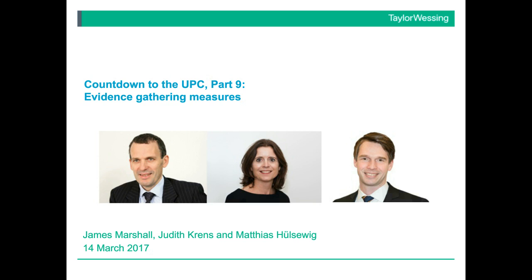Under the UPC agreement, the means of giving or obtaining evidence to prove a party's case in a UPC action falls into various categories. The UPC agreement provides for such matters as hearing the parties, requests for information, production of documents, hearing of witnesses, opinions by experts, inspection, conducting experiments, and sworn statements in writing. These are described in expanded form in the corresponding parts of the Rules of Procedure, which specifically refer, in addition, to such matters as written evidence, experts' reports, and reports of experiments.